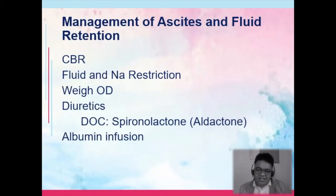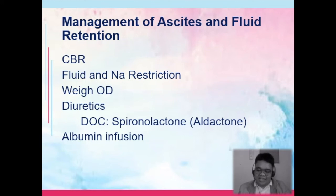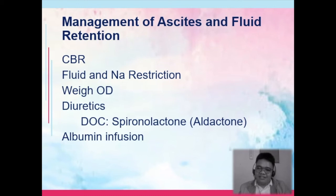For management of ascites and fluid retention: the patient is advised to be on complete bed rest because the ascitic fluid creates pressure toward the diaphragm, causing shortness of breath. Fluid and sodium are restricted. Patients are weighed daily along with abdominal girth measurement. The diuretic of choice is spironolactone (Aldactone), a potassium-sparing diuretic. Albumin is transfused because it increases osmotic pressure and facilitates re-entry of ascitic fluids into the intravascular space.